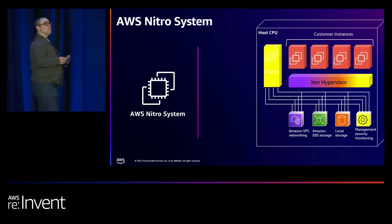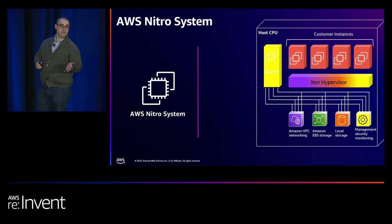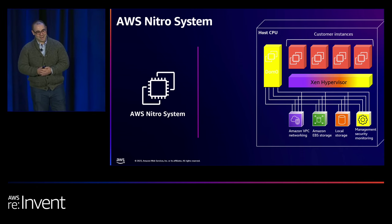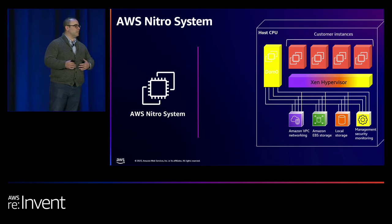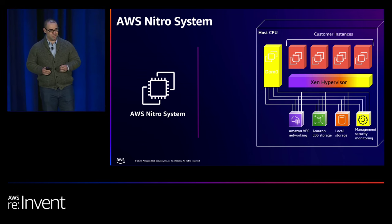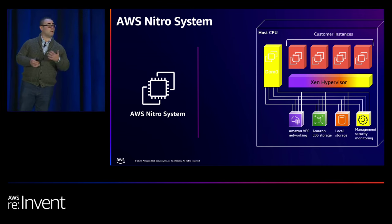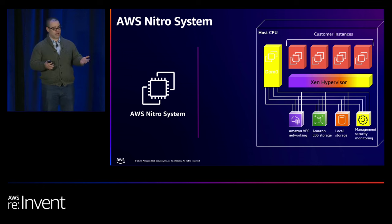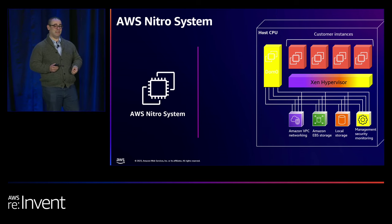In our shared responsibility model, this is about security and privacy of the cloud. To understand the Nitro system, it's useful to understand the journey that got us there. Pictured here is a high-level logical representation of a classical virtualization system — specifically using the Xen hypervisor. Before we had the Nitro system, we were actually using Xen. The last instance we released that looked like this was back in 2012.